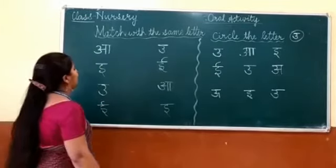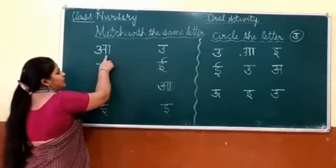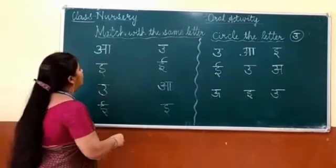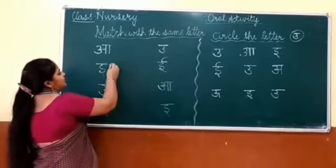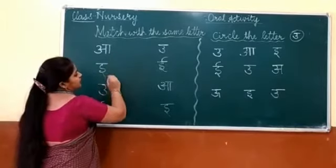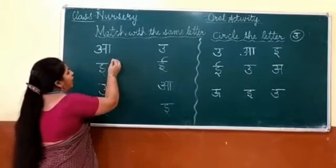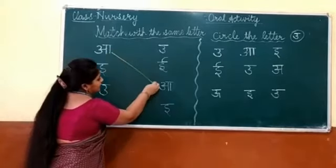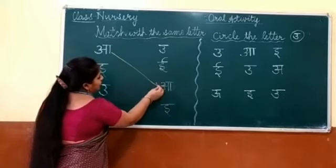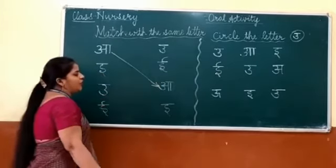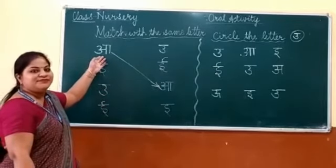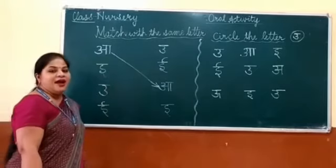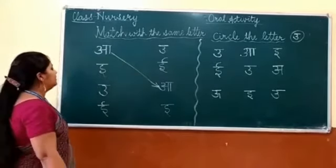Okay students. Which is the letter of this? This is the Bada A. Okay, Bada A ko Bada A — so we can get a question here: find the letter Bada A. Yes, this is the letter Bada A. Bada A se A.